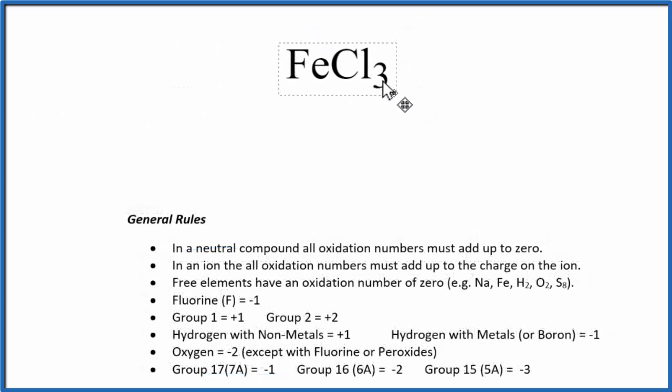Let's do FeCl3. So FeCl3, that's a neutral compound. There's no plus or minus charge like you'd see with ions. So all the oxidation numbers, they're going to add up to zero. We said we don't really know what iron is, but we can look at the chlorine and figure that out. We said chlorine's group 17, 7A, minus one oxidation number.